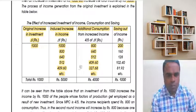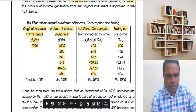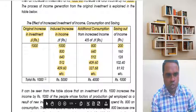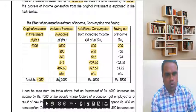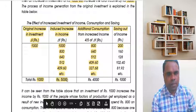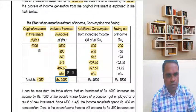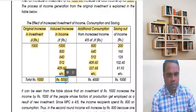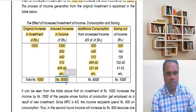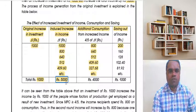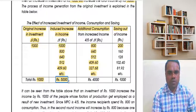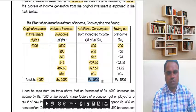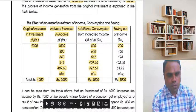The direct answer is: original investment increased by 1,000 rupees, but the resultant total income increased by 5,000 rupees. The initial 1,000 rupees multiplied by five gives 5,000 rupees. Consumption increased by 4,000 and savings increased by 1,000 rupees.